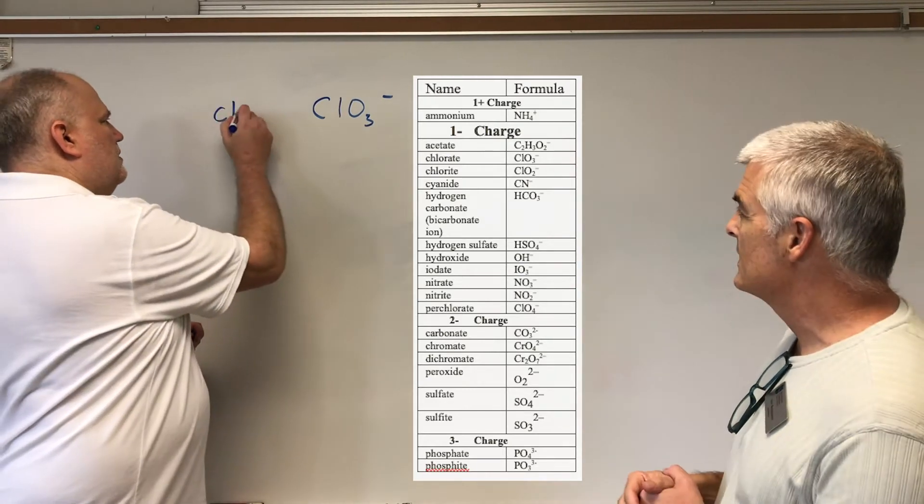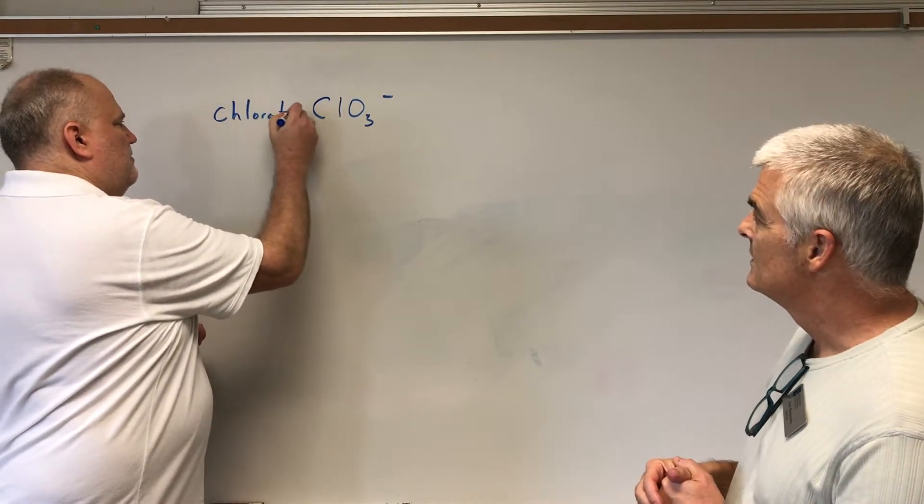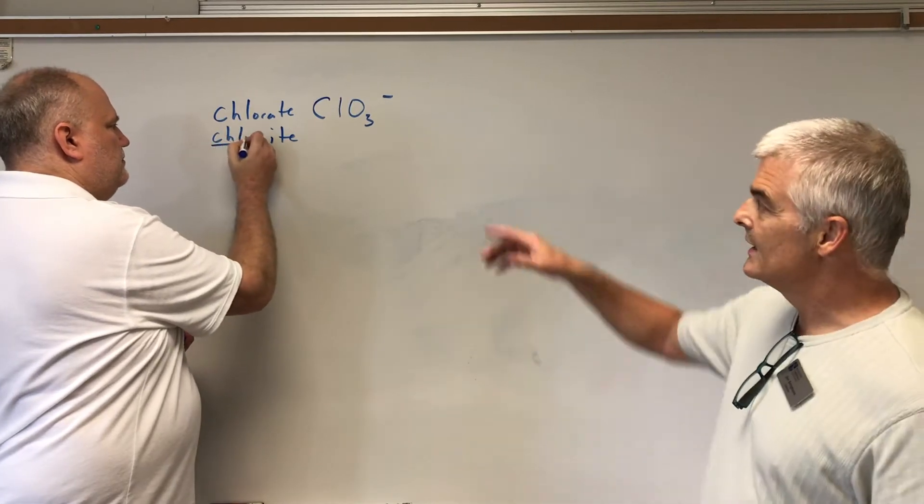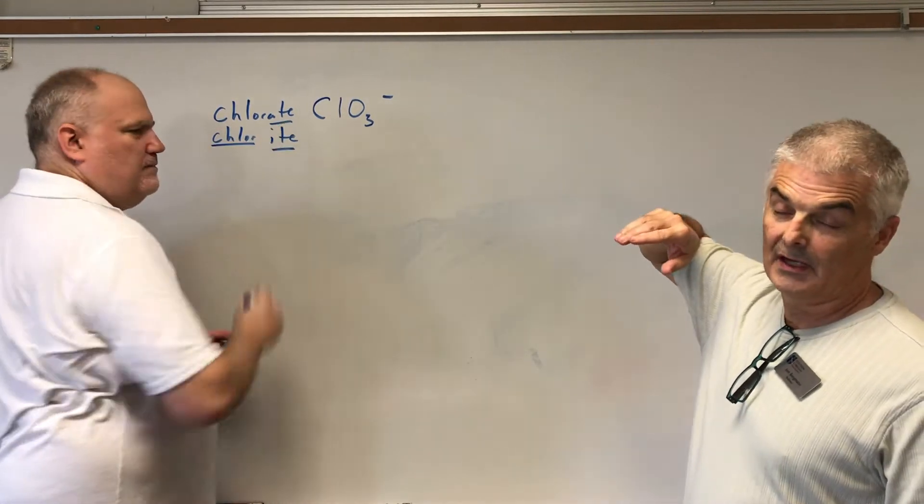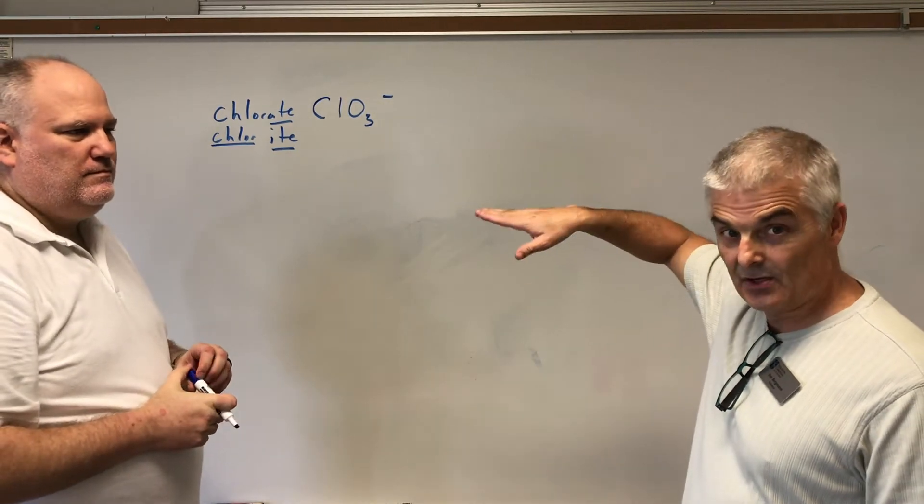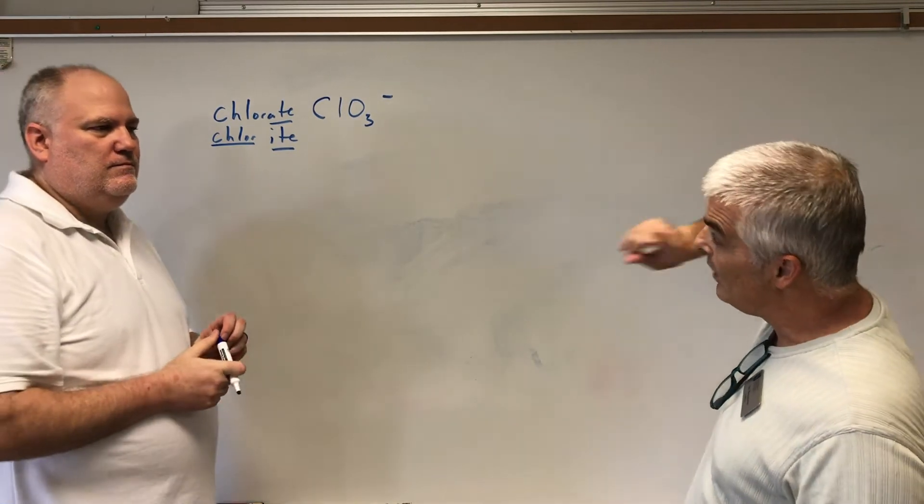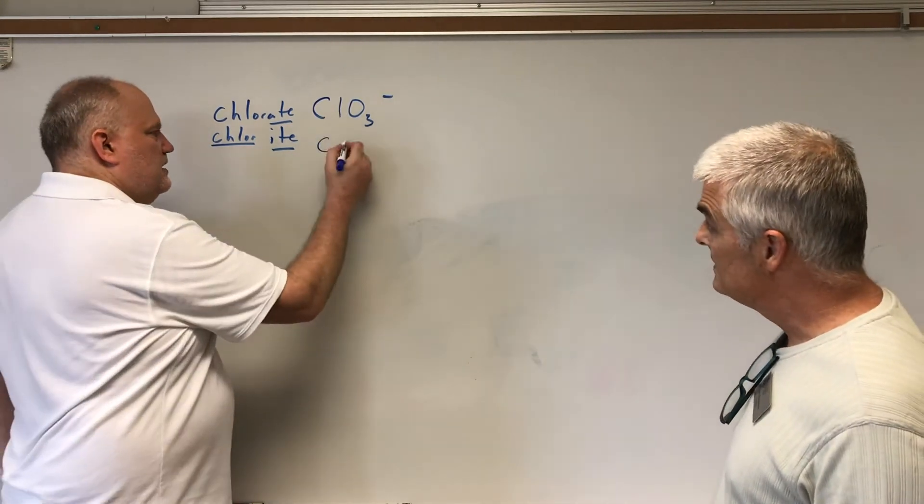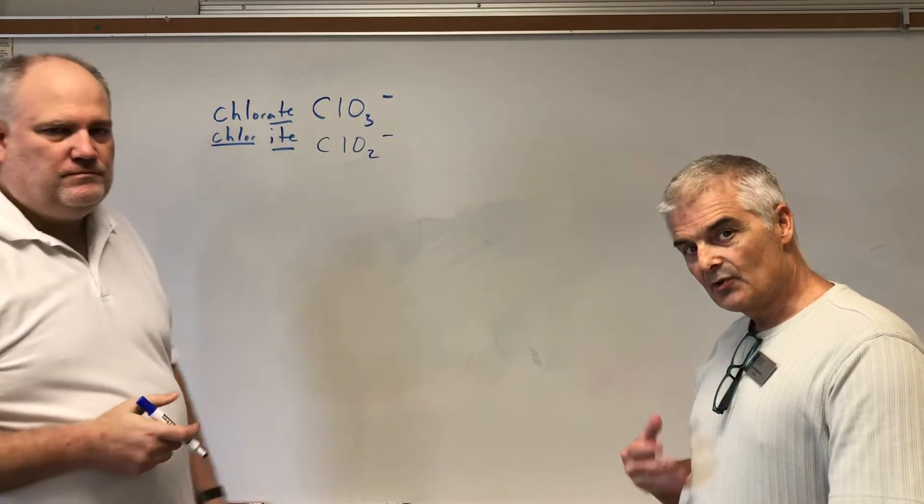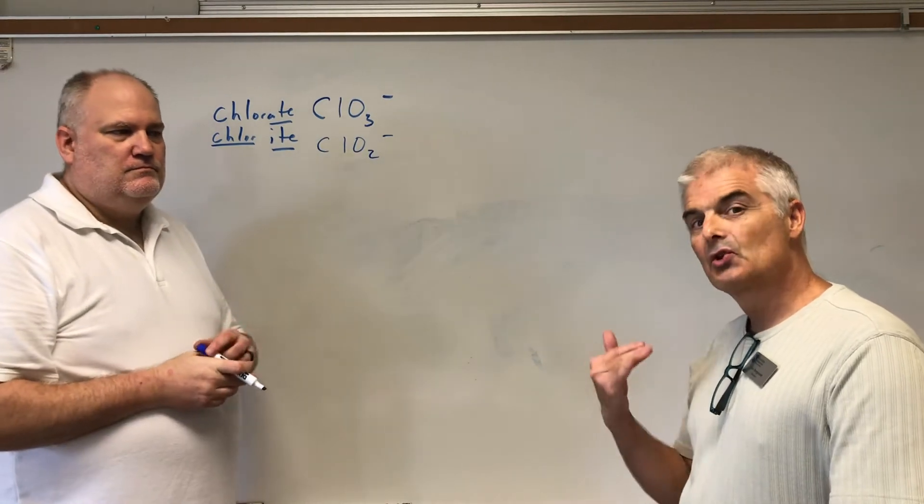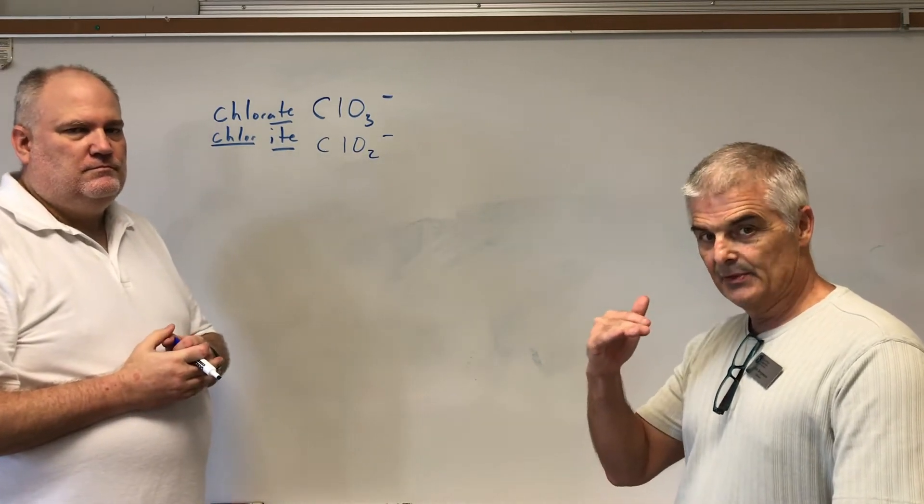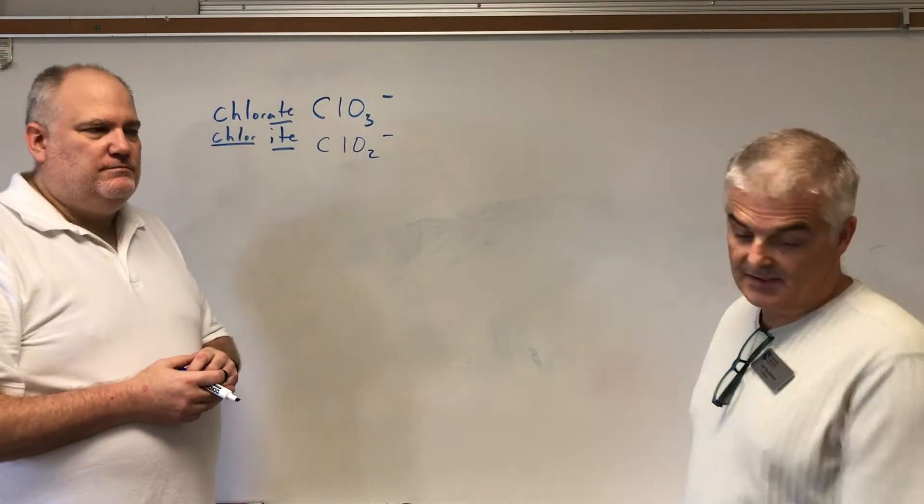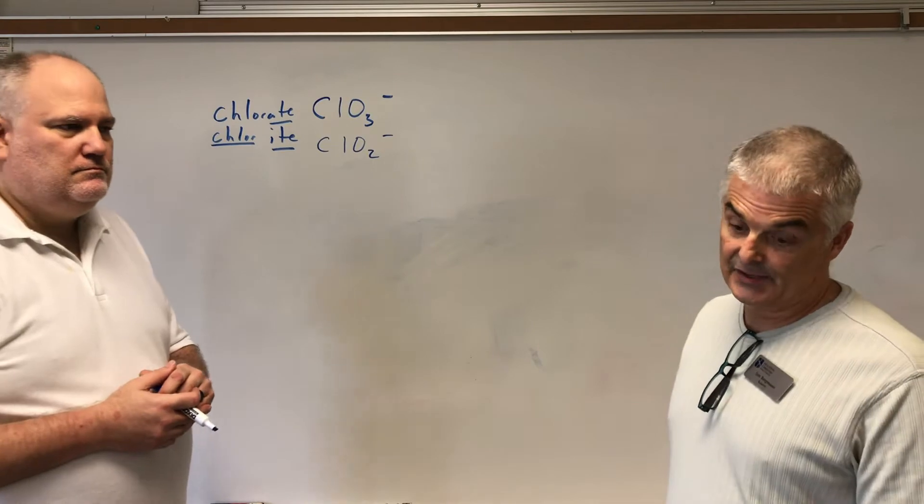This is called chlorate. But there's also one called chlorite. Ite has, here's my rule, has one less oxygen. Ite's always have oxygens and the ite's with one less oxygen and they keep the same charge. So, chlorite would be ClO2 minus. So, my recommendation if you're trying to learn the polyatomic ions is learn the ate ones. They're the common ones. And then the ite's are always one less. Group them together. It makes it a lot easier.